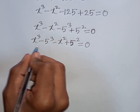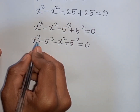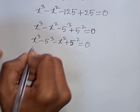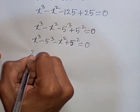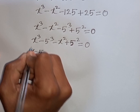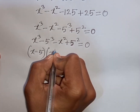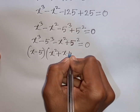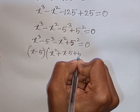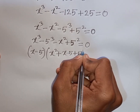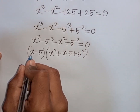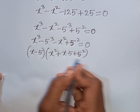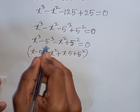Now I can apply the formula for a³ - b³, where a = x and b = 5. According to the formula a³ - b³ = (a - b)(a² + ab + b²), we write: (x - 5)(x² + 5x + 25).